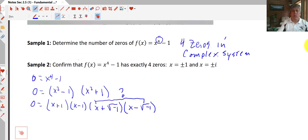So another sample, we want to confirm that the same function, x to the fourth minus one, has exactly four zeros: x equals plus or minus one, and plus or minus i. So we'll give you the zeros, we just need you to confirm that. We know our zeros are our x-intercepts, so we set our function equal to zero, and we go ahead and factor. And fully factored, we get x plus one times x minus one. But what about the x squared plus one?